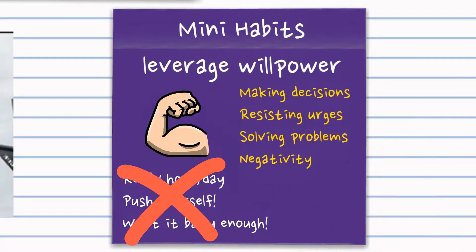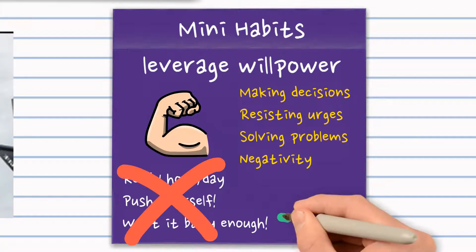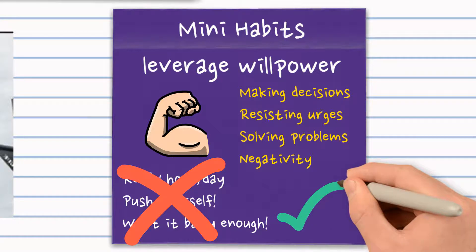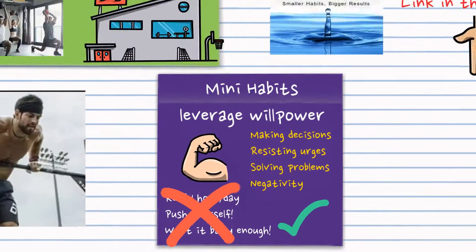Your willpower behaves like a muscle and it gets tired by making decisions, resisting urges, solving problems, and dealing with negativity.